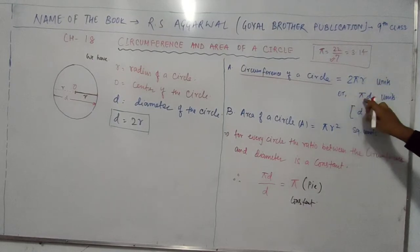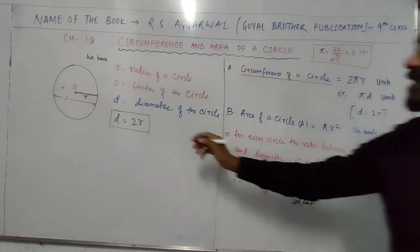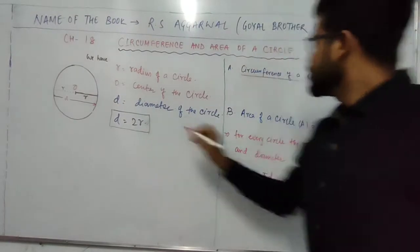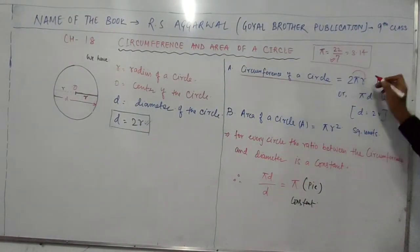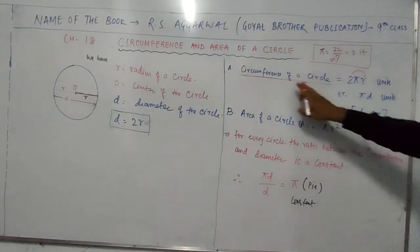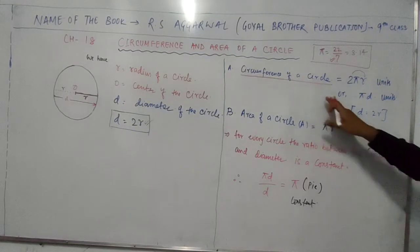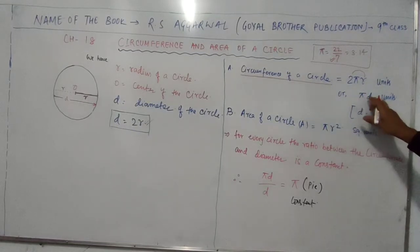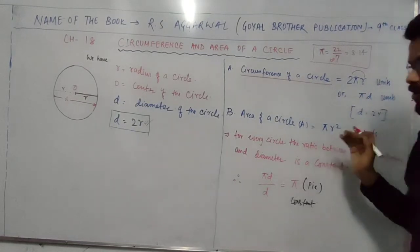Also, the circumference of a circle can be written as pi times d, where d is the diameter. Pi d is the same as 2πr because d equals 2r. So 2 and r together make d. Therefore, the circumference of a circle is also pi into d, where d is equal to 2r.